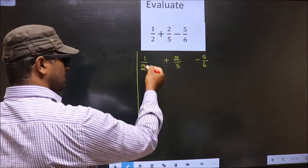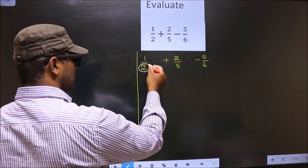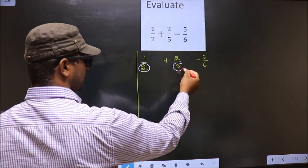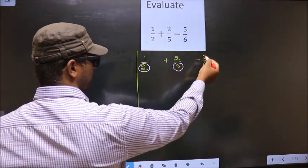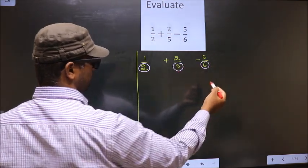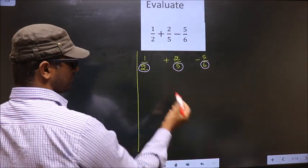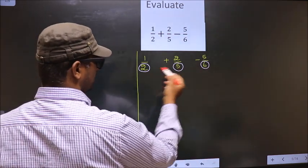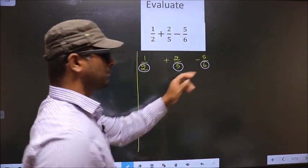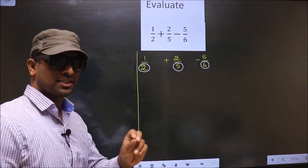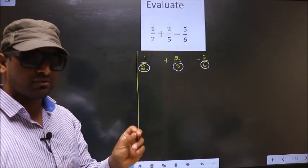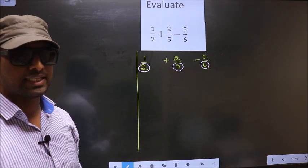In this fraction the denominator is 2. Over here the denominator is 5. Over here the denominator is 6. As you observe, the denominators are not the same. Whenever the denominators are not the same, we should take the LCM of them.